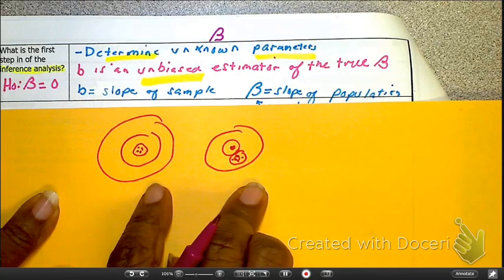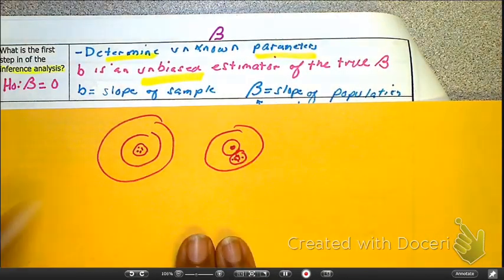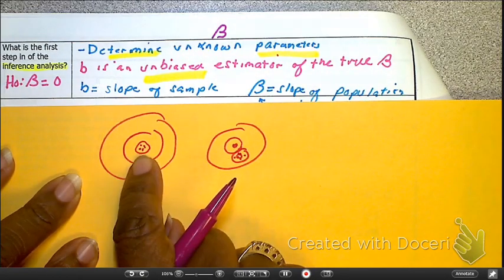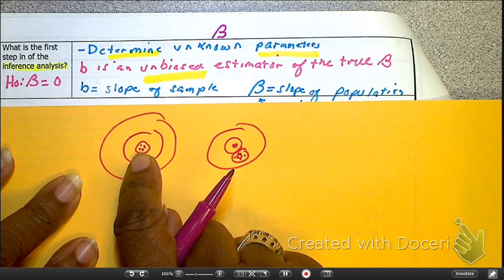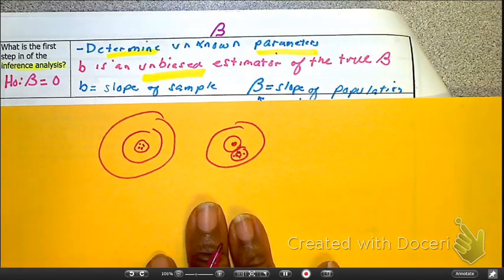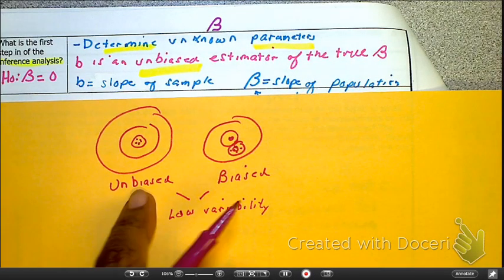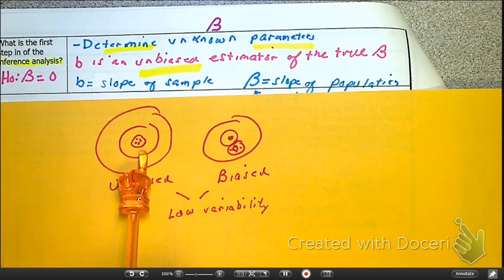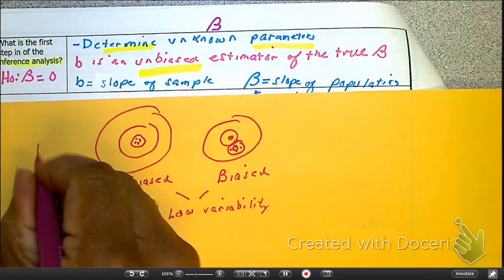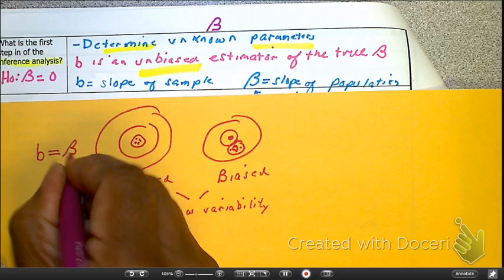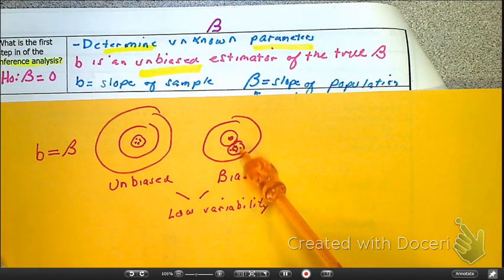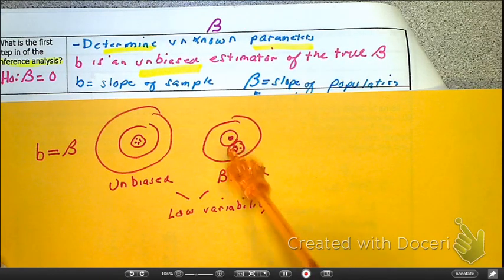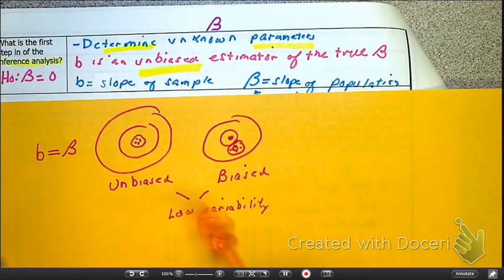Now we're talking about slopes. Our slopes have to hit center mass — the center of the bullseye. If all those sample slopes hit the bullseye, that means the slope of the samples is going to be approximately the same as the slope of the population. If it's biased, we're not hitting the bullseye — that's a problem. Both cases can still show low variability, meaning low standard deviation.